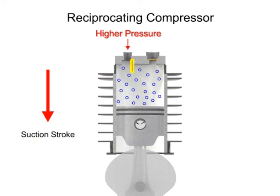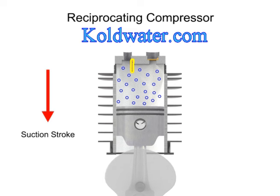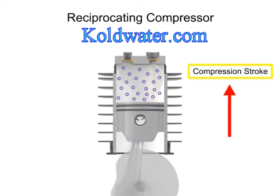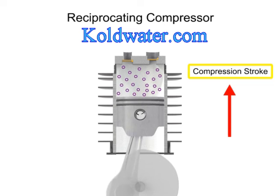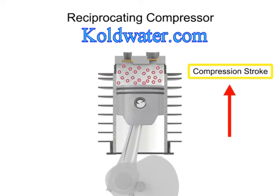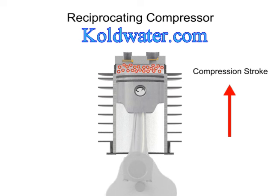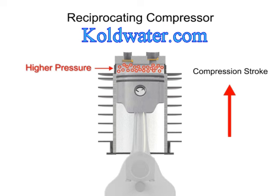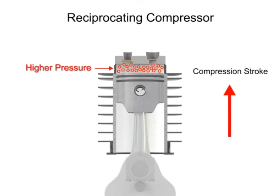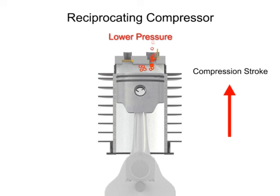This allows the higher-pressure outside air to push open the inlet valve and allow more air into the cylinder. As the piston begins its upward compression stroke, the volume within the cylinder decreases. The decrease in volume causes the pressure to increase, which opens the outlet valve, and compressed air discharges from the cylinder.